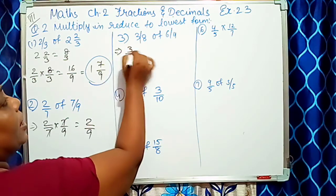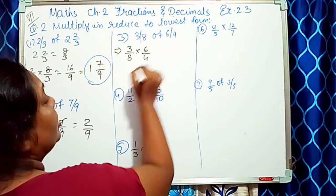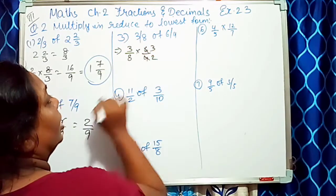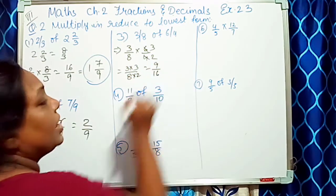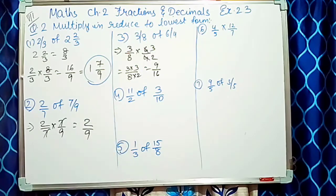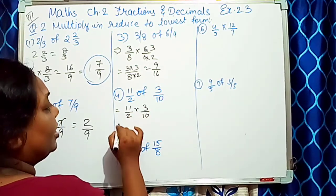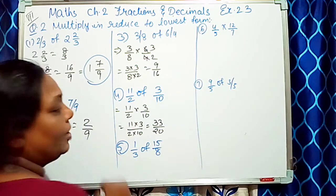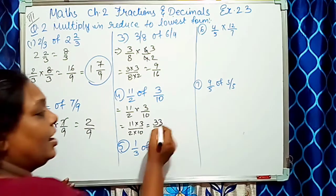Teesre sum mein: 3/8 into 6/4. Simplify karte hain — 6 aur 2 ke table mein: 2×3=6, 2×2=4 — toh 3/8 into 3/2. Ab 3×3=9, 8×2=16, so 9/16. Agle step mein into 3/10 — cancel nahin hoga — toh 9×3=27, 16×10=160.